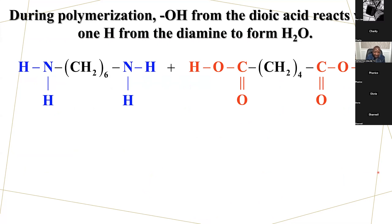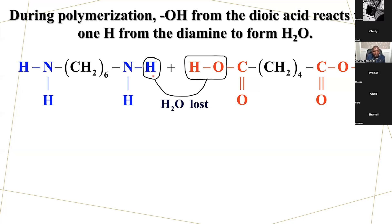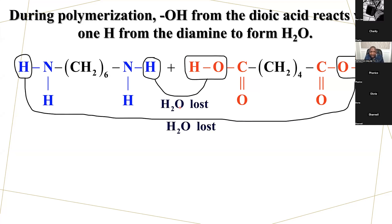During polymerization, the OH comes from the dioic acid. Many students don't know that the carbonyl group gives the OH, while the hydrogen comes from the amine. So the hydrogen from the amine combines with the OH from the acid to form water. The other hydrogen will also combine with the other OH to form water. So normally we have two moles of water lost whenever two monomers combine, and then the remaining components combine. The monomers align themselves and then you get your polymer.